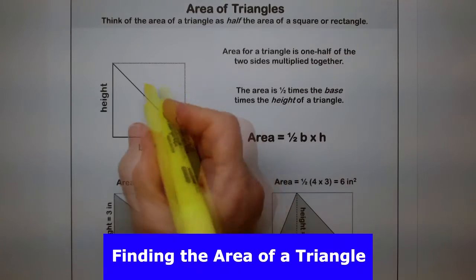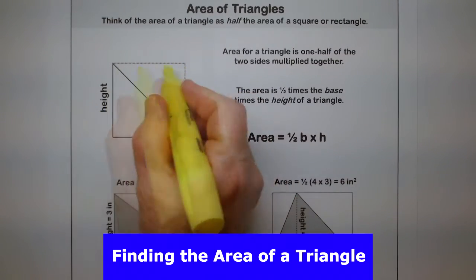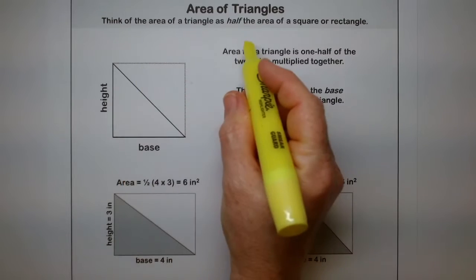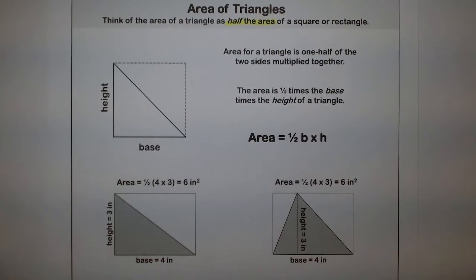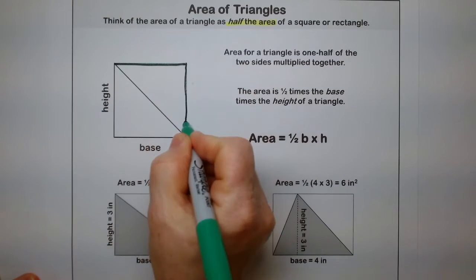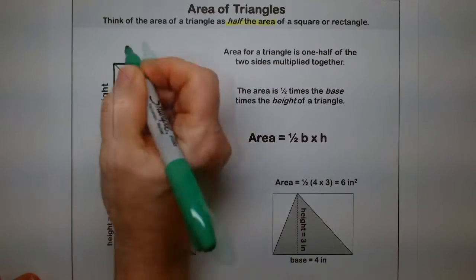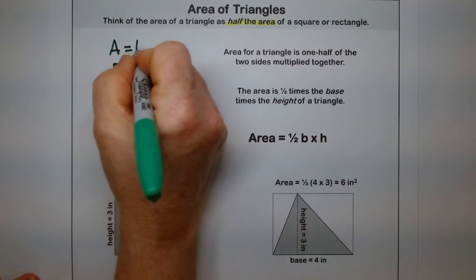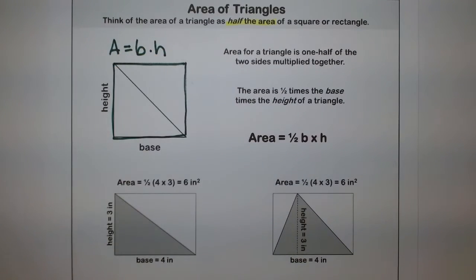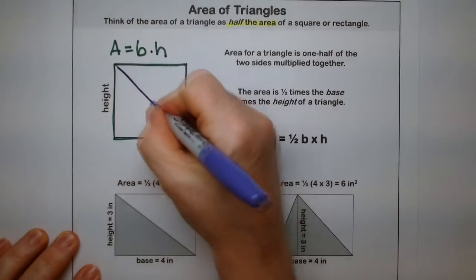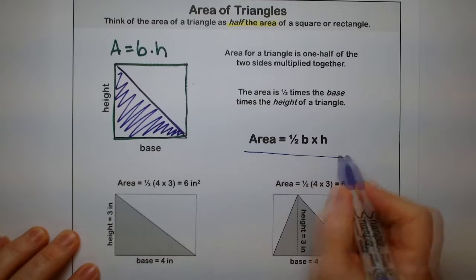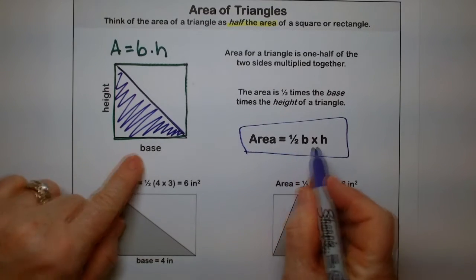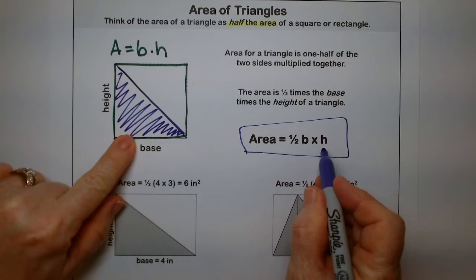Area is how much two-dimensional space something takes up. And the area of a triangle takes half the area of a square or rectangle. So the area of a square, for example, if I wanted to find the area of this shape here, the area is base times height. But if I only want this triangle here, I'm going to take half the base times the height. So I only need half of that area.